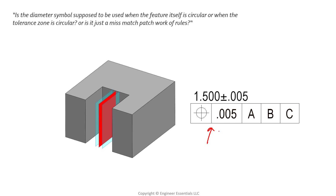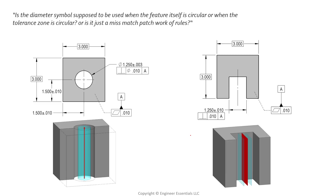The next example has no diameter symbol in the feature control frame, because we're controlling a width feature. There's a width dimension to the size of an inch and a half, plus or minus five thousandths in size, and the location of this width feature is held to five thousandths. We know our tolerance zone is two parallel planes whenever we're controlling the position of a width feature, so it's not a diametric tolerance. With position controlling a cylindrical feature, the tolerance zone is a cylinder with a diameter of five thousandths; for the width feature, it's two parallel planes spaced five thousandths apart — no diameter symbol.